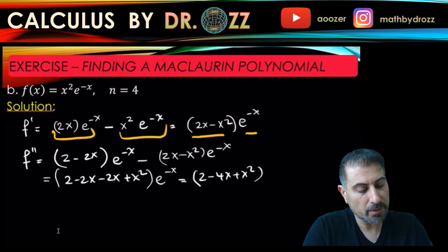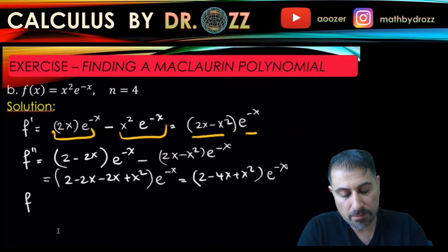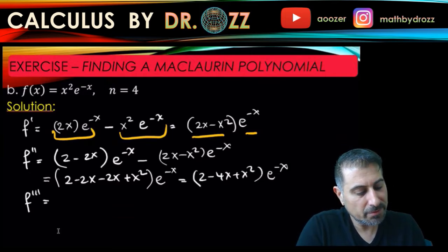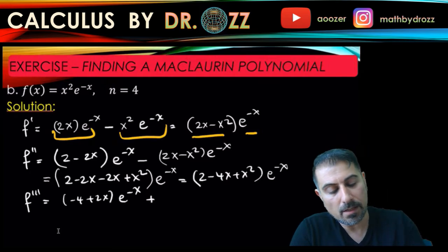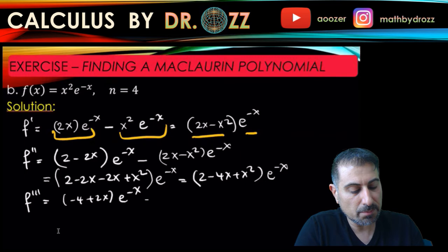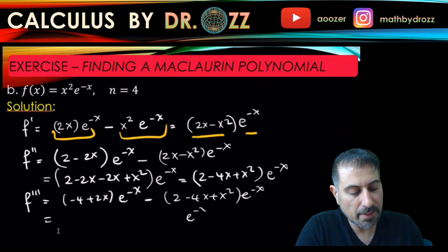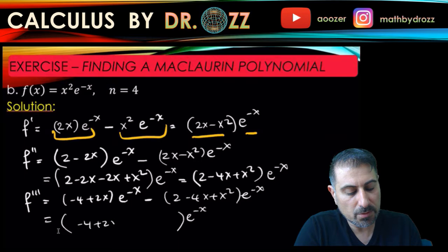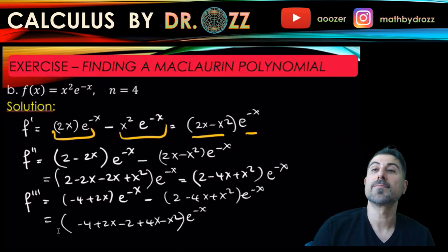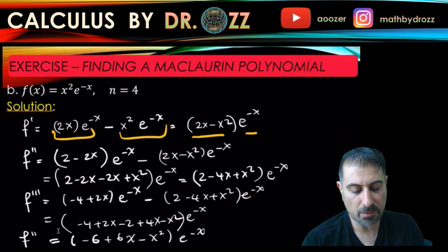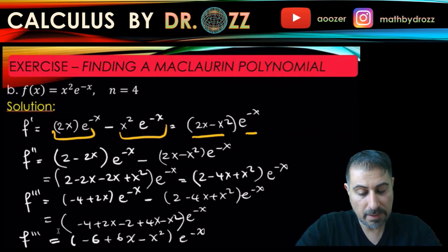Now let's compute f triple prime. This is good practice with differentiation and the product rule. The derivative of the polynomial term is (minus 4 plus 2x), times e to the minus x, plus the derivative of e to the minus x — bringing a minus sign — times (2 minus 4x plus x squared). Factoring out e to the minus x and simplifying yields (minus 6 plus 6x minus x squared) times e to the minus x.